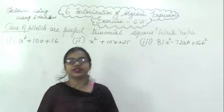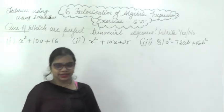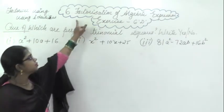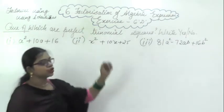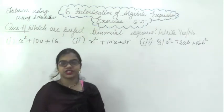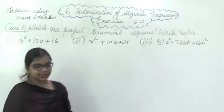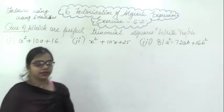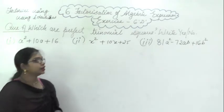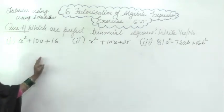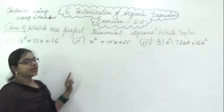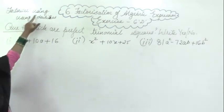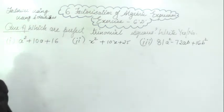Good morning all of you. Today we will start Exercise 6D of Algebraic Expression because we have to categorize the factorization of Algebraic Expression. Before we start Exercise 6D, I am going to tell you that this is a totally different method we are going to use in this exercise. Here we will use factorization using the Identities.